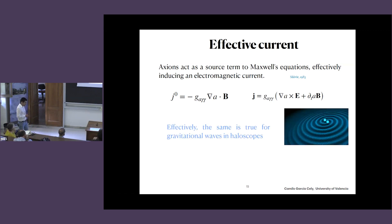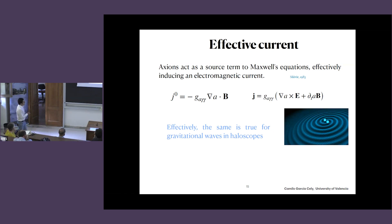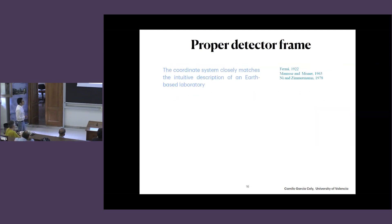Effectively, the same is true for gravitational waves — that's really the analogy. Gravitational waves also generate an effective current. But this is an effective description and we have to be careful about this. I have a few slides on this because it's a very important topic, and there has been a lot of discussion in the literature about it.